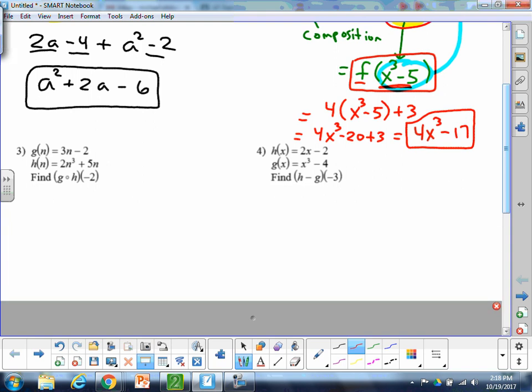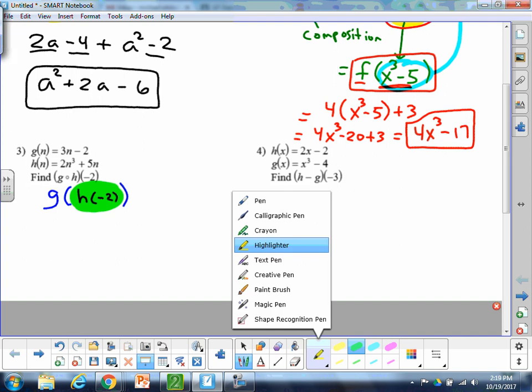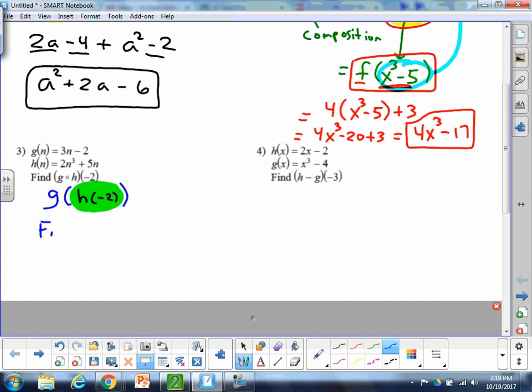Now same kind of thing down here. Number 3, they want g of h of negative 2. I would kind of suggest rewriting it again without the little open circle there. Sometimes that gets confusing, but if you see it written this way, it's a little more clear. We need g of h of negative 2. So same kind of concept as the previous one. I'm always going to start on the inside. This time they actually gave me a value to use for the variable. So I'm going to find h of negative 2 first by just plugging into rule h. I'm going to plug into this rule.